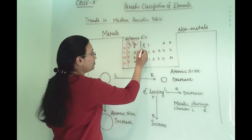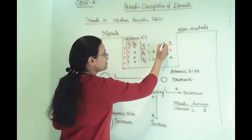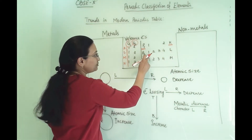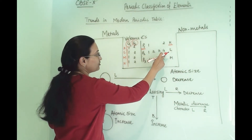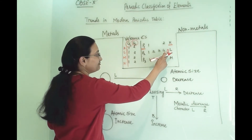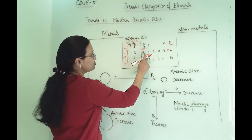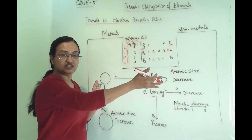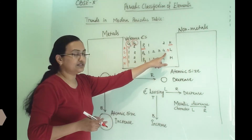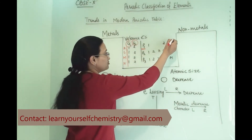Now when we are talking about a period — it is only for one shell. The first period is for the K shell, the second period is for the L shell. So in one particular shell, one electron is being added up until that orbit is completely filled with 8 electrons. The last will be noble gases, completing all 8 electrons. So across the period, all the electrons are being added up in the same shell.